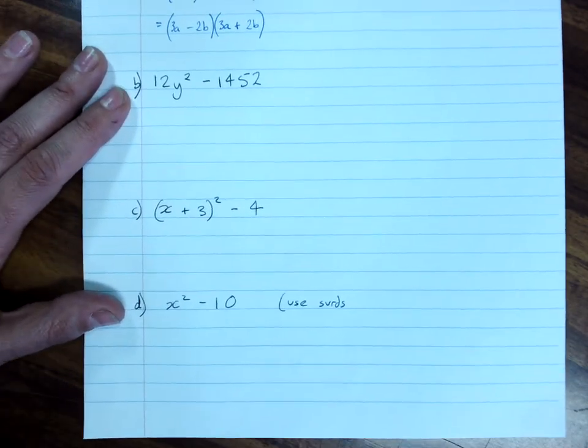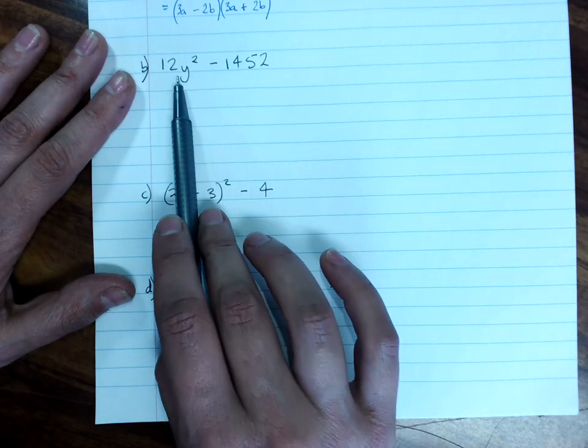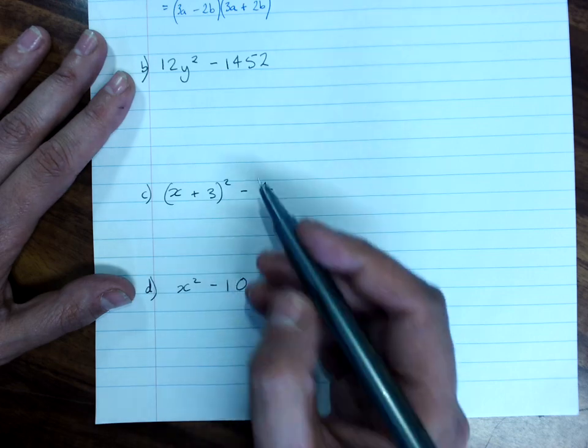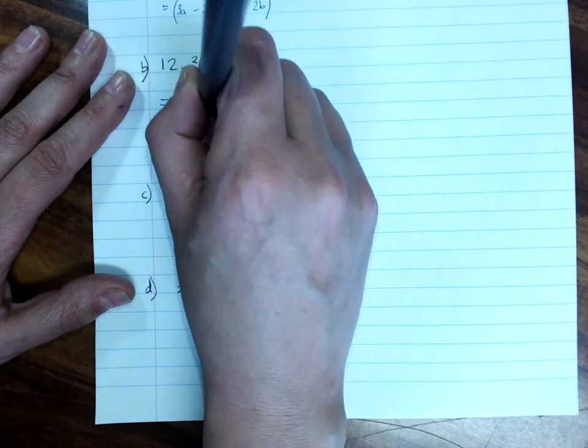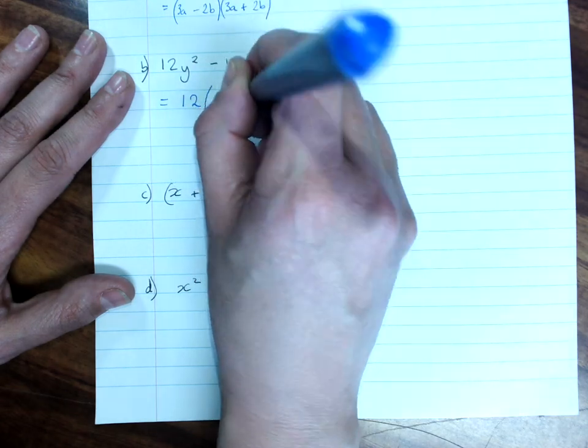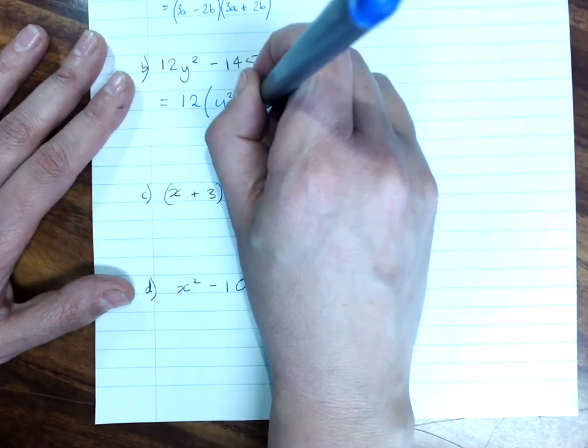So, next one, always check for a highest common factor. 12 goes into both of these. Factorize it out first. 12 outside of y squared minus 121. 1452 divided by 12 is 121.